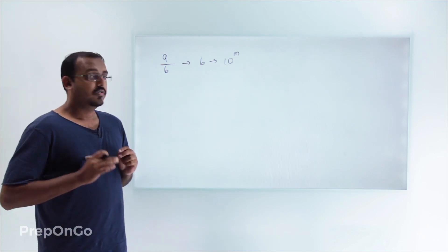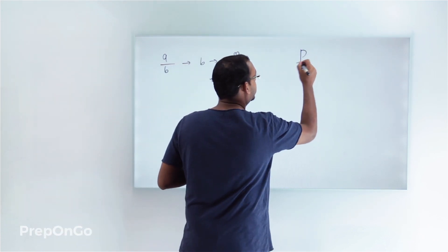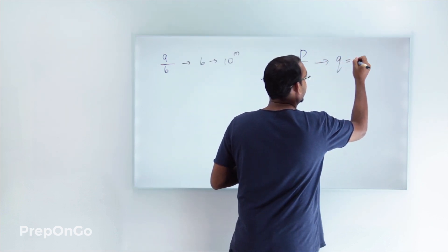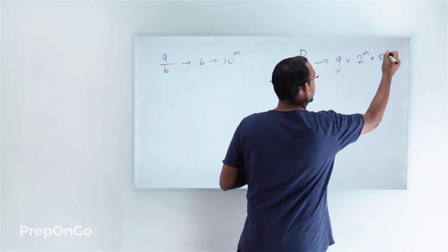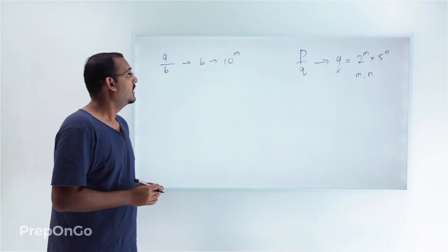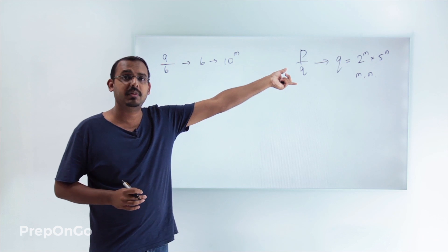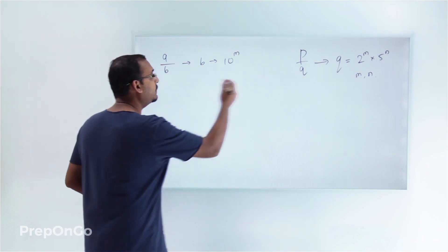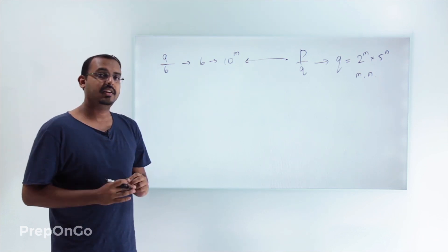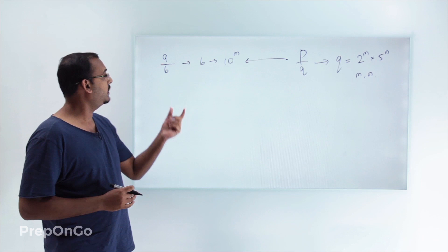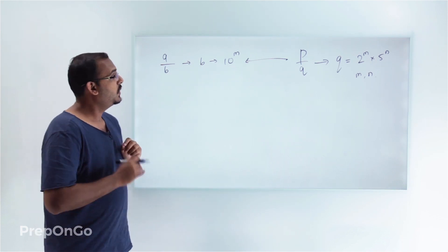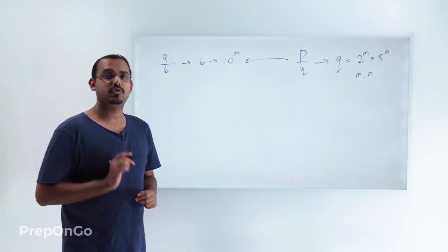We have a rational number p by q where q can be represented as 2^m × 5^n with m and n non-negative integers. What we have to do is represent this rational number p by q in the form a by b, where b is of the form 10^m. If we can do that for every such rational number, we can say the corollary of the given theorem is true.